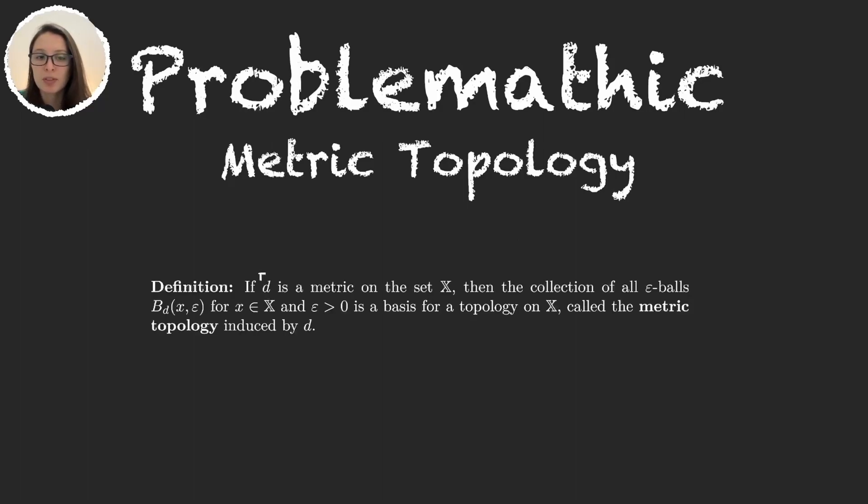The idea is that we have a metric space (X,d), and we can generate a topology with this metric just by taking as a basis the collection of all the balls for every x in the space and every radius greater than zero. This will give us a basis for the topology, and from that basis we can get the topology itself.